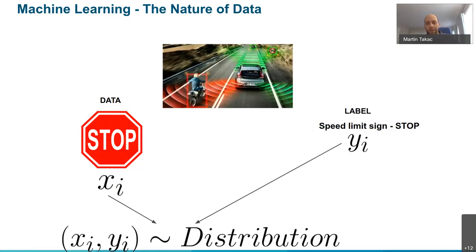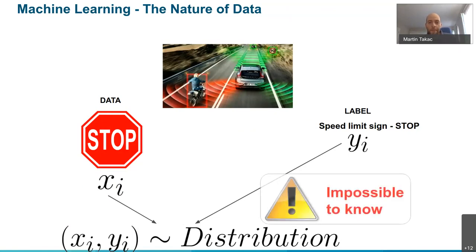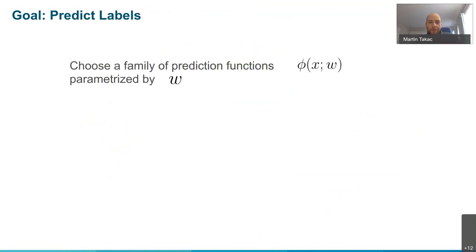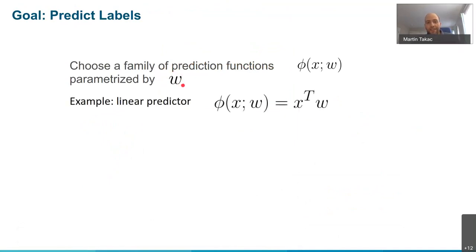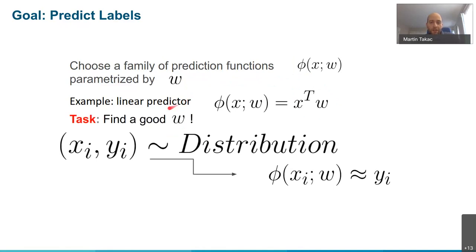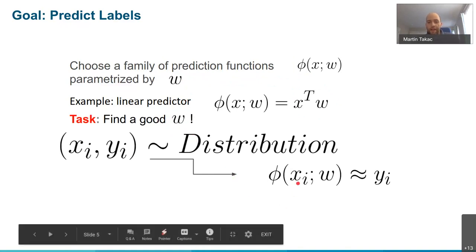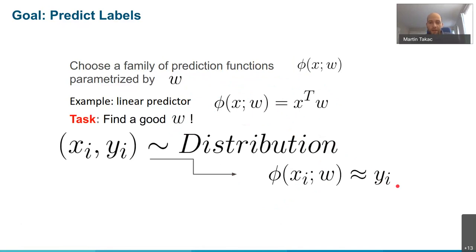Usually we don't know the distribution for sure. In machine learning, we can try to choose some parameters - let's say w, sometimes called x in later slides - those are my weights. I can choose some prediction function: a linear prediction which is just summing the x_i's with w_i's, computing this product between the input and the weights. This is basically the simplest linear model. Afterwards, I want to find good weights w such that if I get some new instance - a new email or a new picture - I will compute this prediction and it should be very close to my y_i.